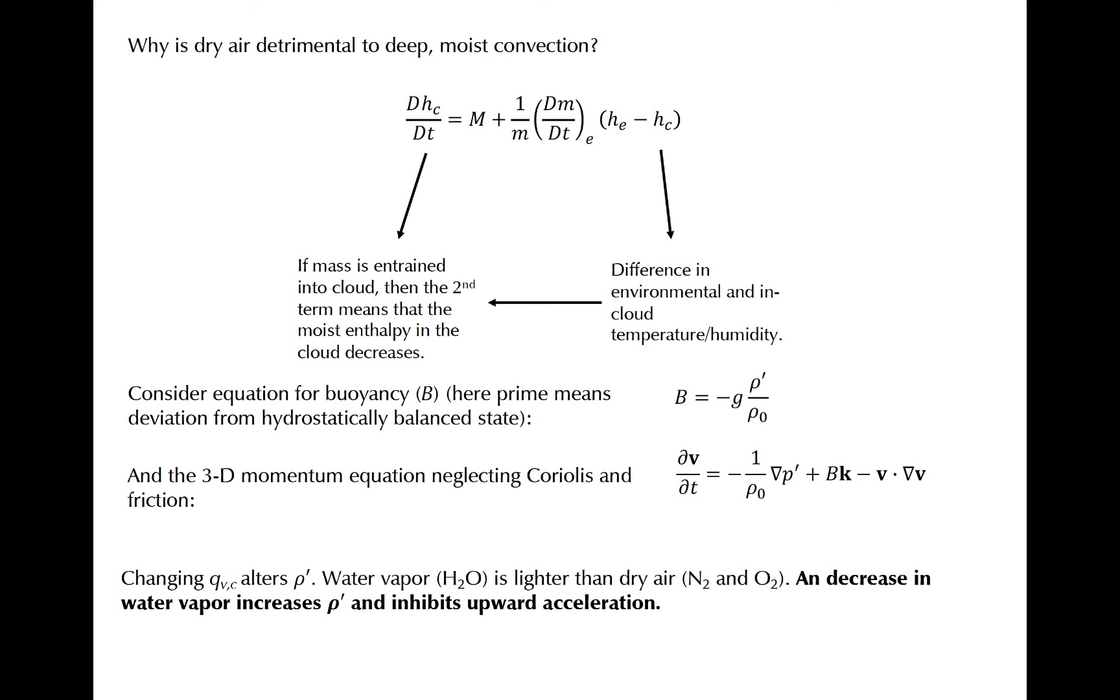Consider how a change in water vapor concentration changes rho prime. A water vapor molecule is lighter than both molecular nitrogen and molecular oxygen, the two primary constituents in Earth's atmosphere. Therefore, a saturated cloud will always be less dense than surrounding air with the same temperature. That makes rho prime negative, and when considering the negative sign in the equation for buoyancy, that saturated air parcel experiences upward acceleration.